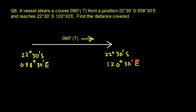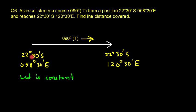This is the same problem we already discussed in part two, however questions seven and eight are going to be more difficult, so stay tuned. Since the latitude is constant — 22°30'S at both positions — the vessel is doing parallel sailing.